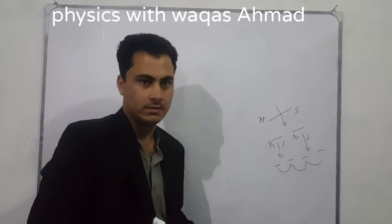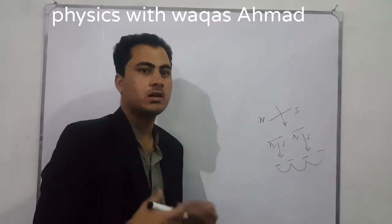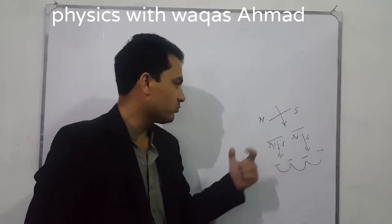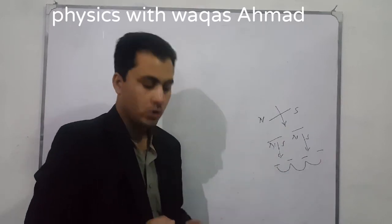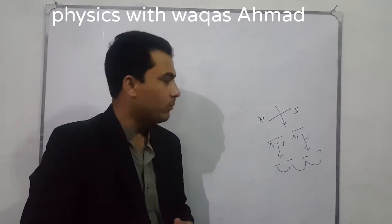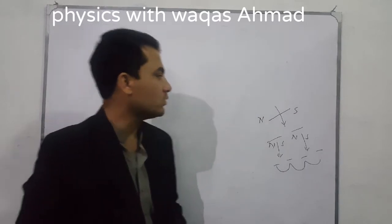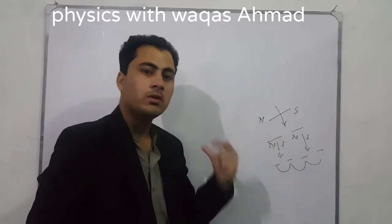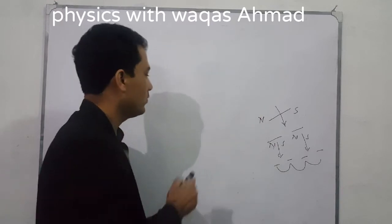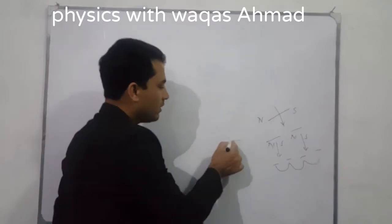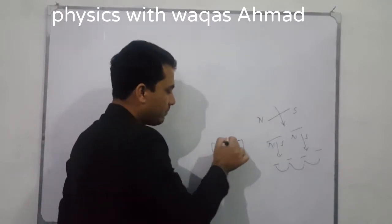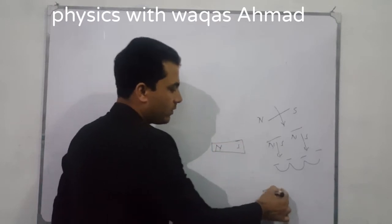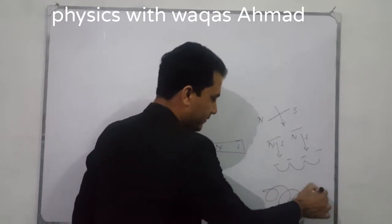Magnetic monopole doesn't exist, but electric monopole does exist — for example, a single positive charge or a single negative charge. There are two classes of magnet: one is called a permanent magnet, such as a bar magnet, and the other is called an electromagnet.